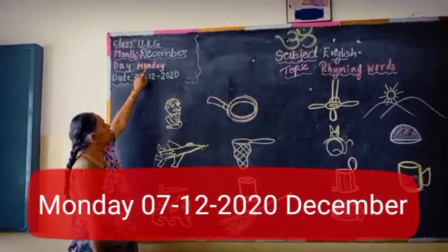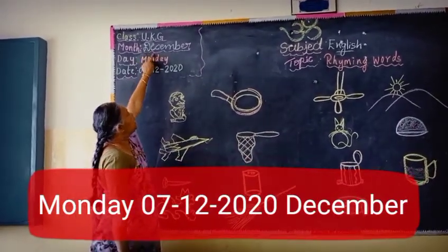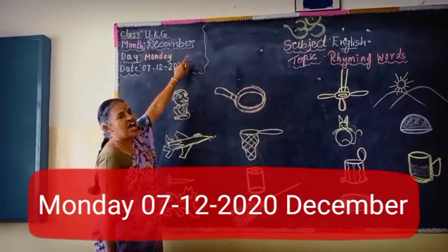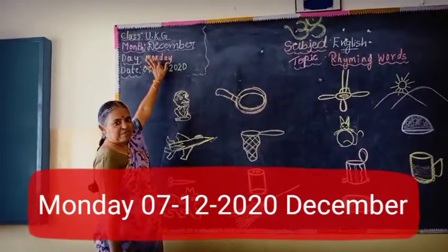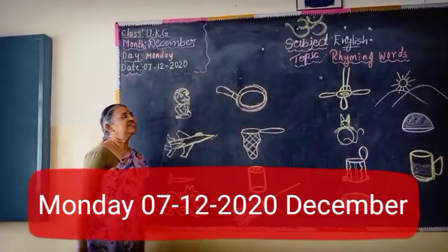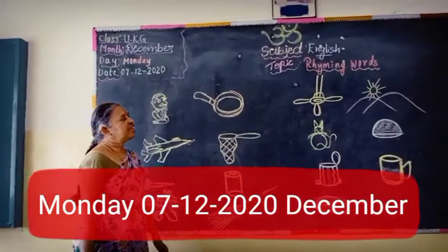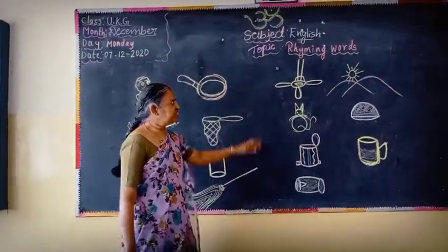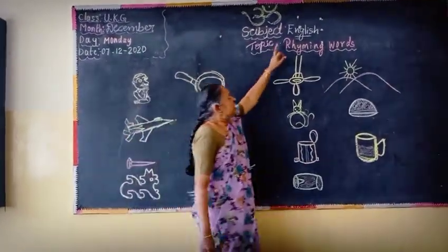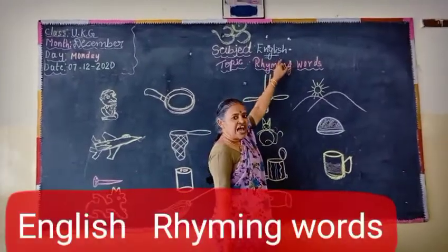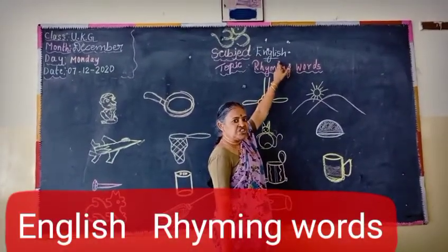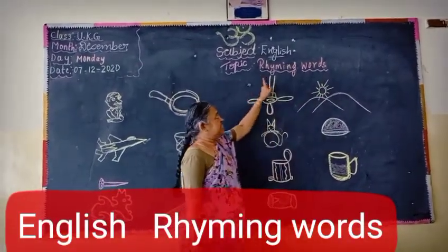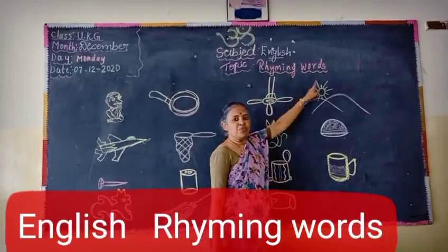You have to learn the spelling of December: D-E-C-E-M-B-E-R, December. You have to learn the spelling of English: E-N-G-L-I-S-H, English. Today's topic is Rhyming Words.